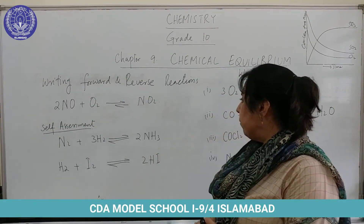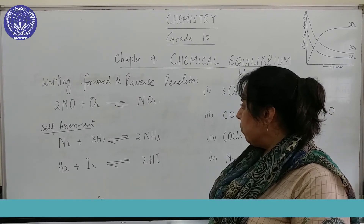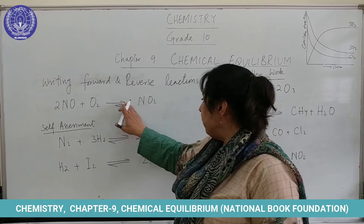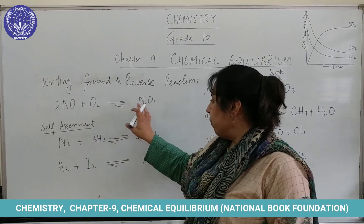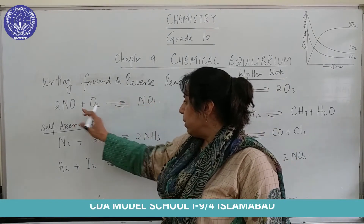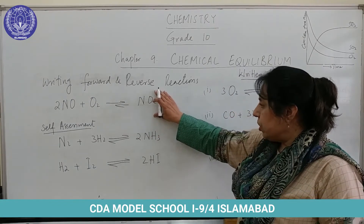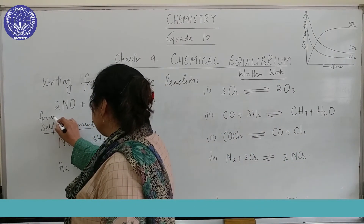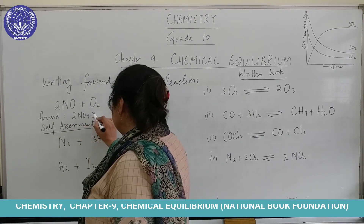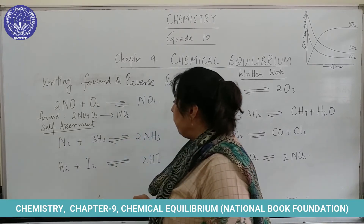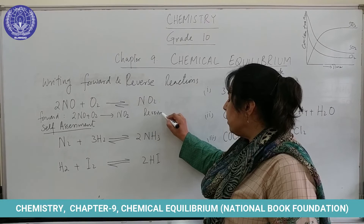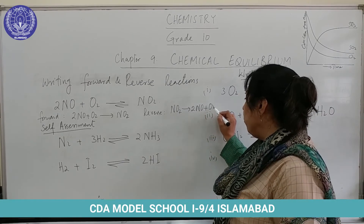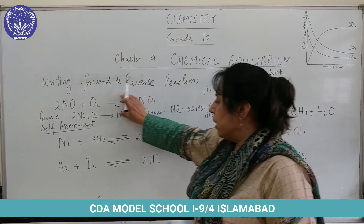I will teach you how to do these exercises. You will have to write the forward and the reverse reactions. The first reaction is 2NO + O₂ gives NO₂. As you know it is composed of two different reactions — the forward and the reverse reaction — so we will split it. The forward reaction: 2NO + O₂ gives NO₂. The reverse reaction: NO₂ splits to form 2NO and O₂. So this is the reverse reaction for this chemical reaction.